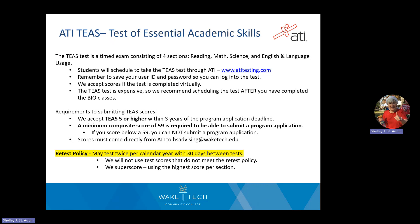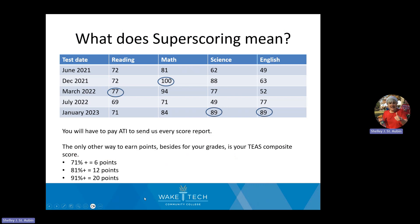We also superscore the TEAS. If you've tested more than once, we look at each test, round up your scores, and average them to give you your composite. The highest scores from different test dates are used to determine your final composite score. This matters because you can earn points for your TEAS composite score: a 71% or better earns 6 points, 81% or better earns 12 points, and 91% or better earns 20 points. This can be helpful if your GPA is lower — TEAS scores might help get you into a competitive range. Please study for the TEAS test.